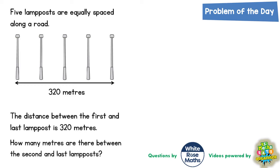Welcome problem solving fans to another problem of the day. This one is all about five lampposts which are equally spaced along a road. The total distance between the first and last lamppost is 320 meters.